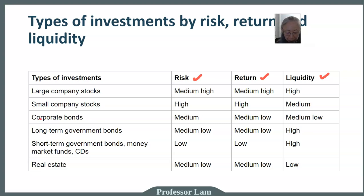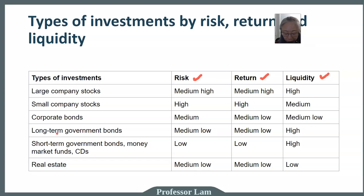Bonds are interesting. Corporate bonds — issued by companies — have medium risk, medium-low return, and medium-low liquidity, so they are not the best investment for individual investors in general. Government bonds have relatively lower risk, relatively low return, and high liquidity. Longer-term bonds have slightly higher interest rate risk compared to short-term bonds. Short-term bonds have very low risk, relatively low return, and very high liquidity.